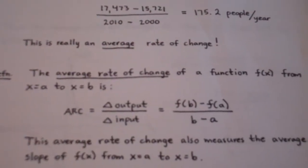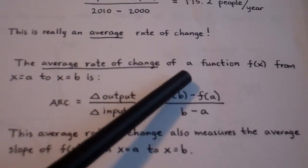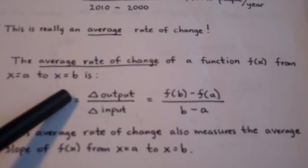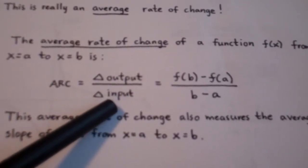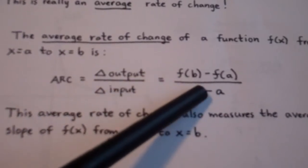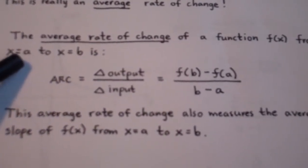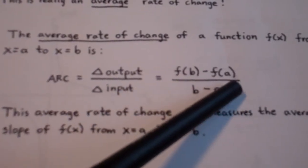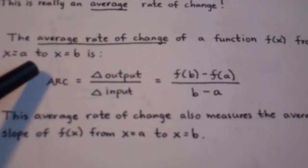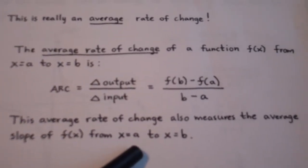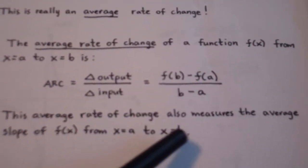Let's look at a specific definition of what average rate of change means. The average rate of change of a function f of x from x equals a to x equals b is defined to be the change in the output values divided by the change in the input values — that's f of b minus f of a, divided by b minus a. This also measures the average slope of the function from x equals a to x equals b.